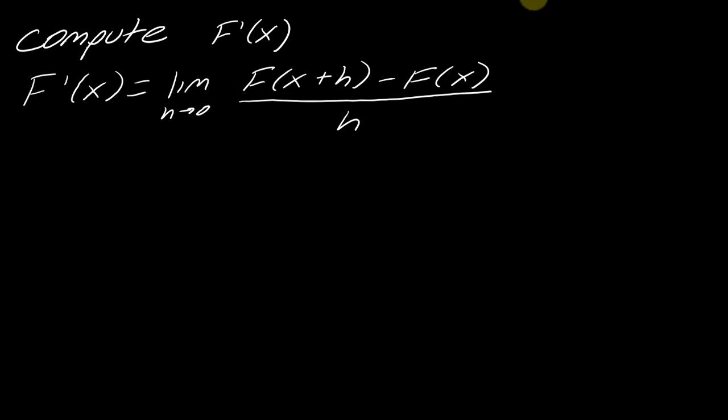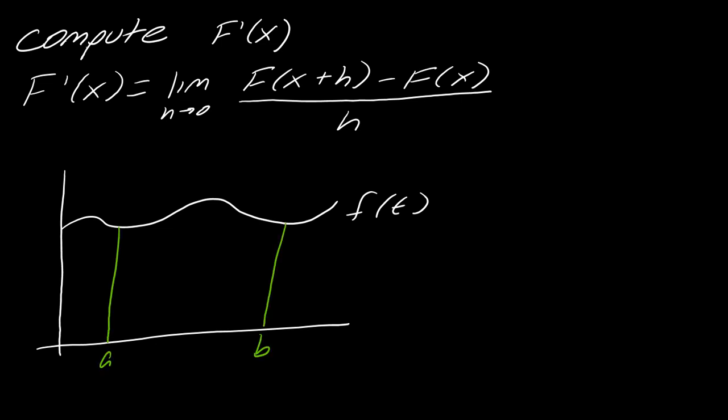So this will be the limit as h approaches 0 of F(x+h) minus F(x), all of this over h. So now what I want to do is I want to think about what is this F(x+h) minus this F(x). So let's bring back this graph for a moment. And here's my f(t). And let's actually figure this out. So this goes, once again, from, so here's my a, here's my b. So let's just start with what is this F(x). So that would mean then that I set some point here. So we'll say this is x. This is computing this area here.